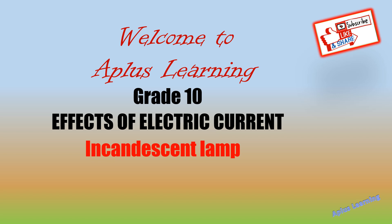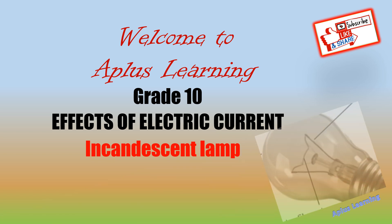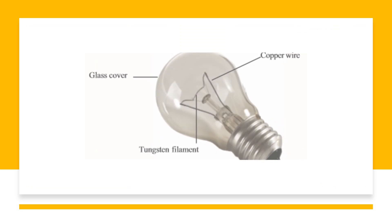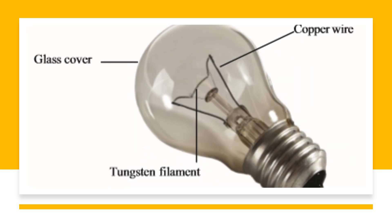Hi children, hope you all are doing good. Today we will be discussing about the incandescent lamps from the chapter Effects of Electric Current. First let's see what is the meaning of incandescent. Incandescent means emitting light as a result of being heated.